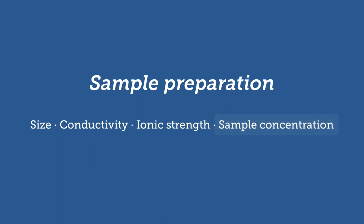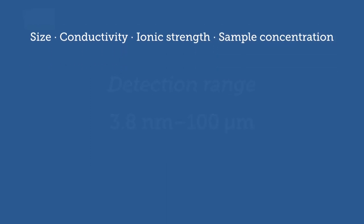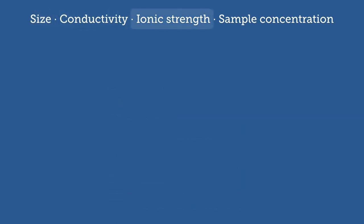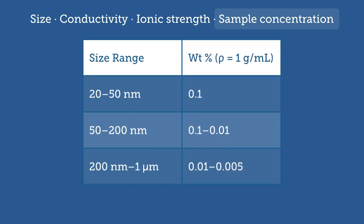According to Malvern, the Zetasizer Nano can detect particles with diameters between 3.8 nanometers and 100 microns for zeta potential analysis. There is a very strong relationship between the diameter of a particle and the intensity of light scattered from it, so concentration requirements will vary. This table provided by Malvern shows the recommended sample concentrations for different size ranges. Note that the table is modeled after polystyrene latex, which has a density of around one gram per cubic centimeter, so your sample needs may vary proportionally.